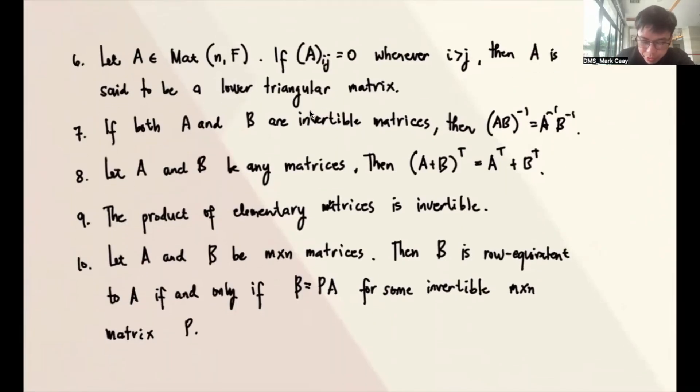Let's go to number 6. Let A be a matrix in the set of N by N matrices with entries in F. If Aij is 0 whenever I is greater than J, then A is said to be a lower triangular matrix. When we say lower, that means this is non-zero, and then this is 0. But when we say upper, that means this is non-zero, and this one is 0.